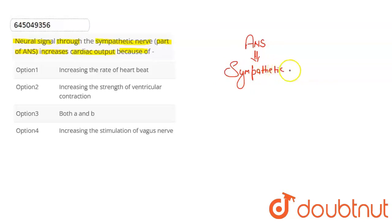The sympathetic nervous system increases the rate of heartbeat, making the heart beat faster.